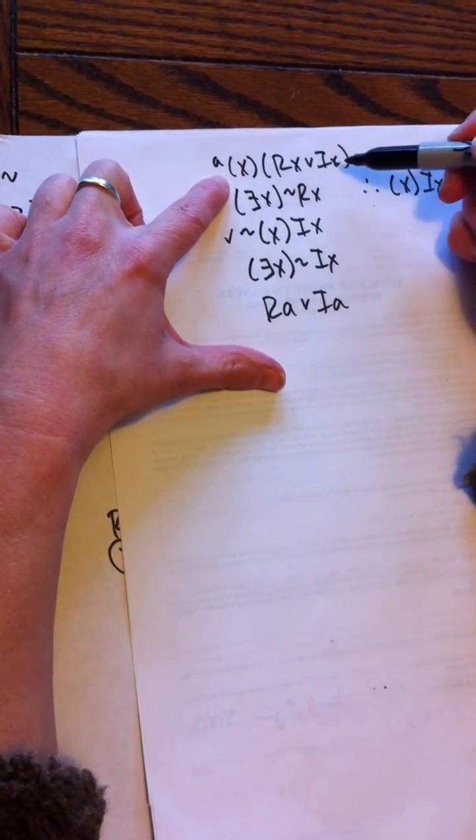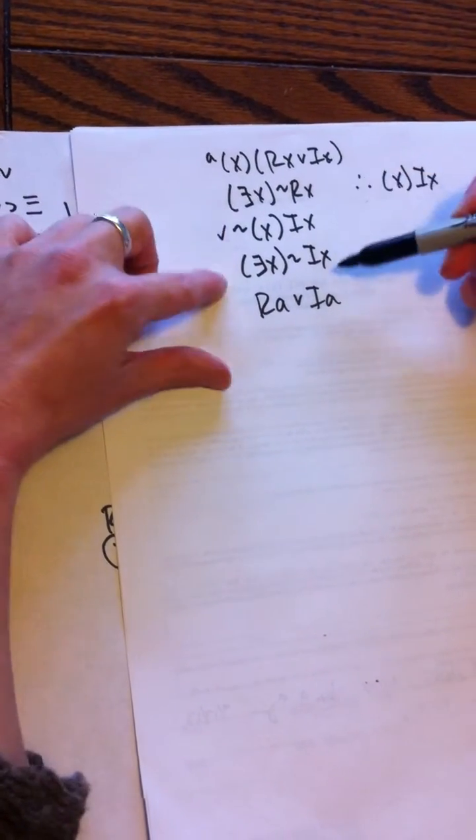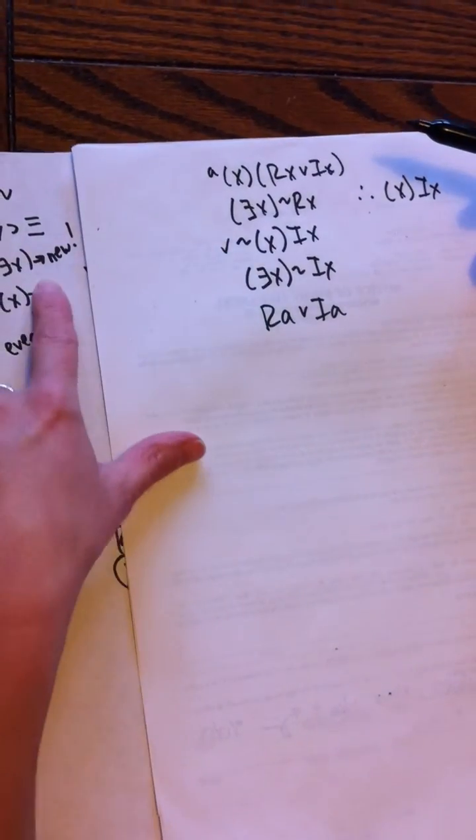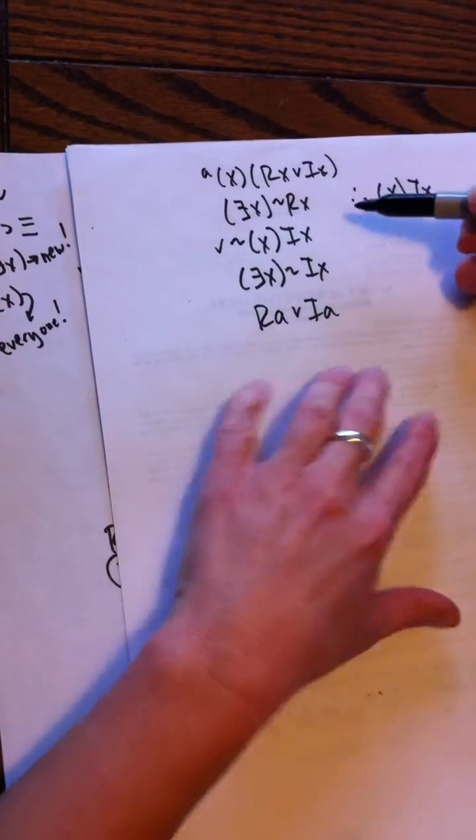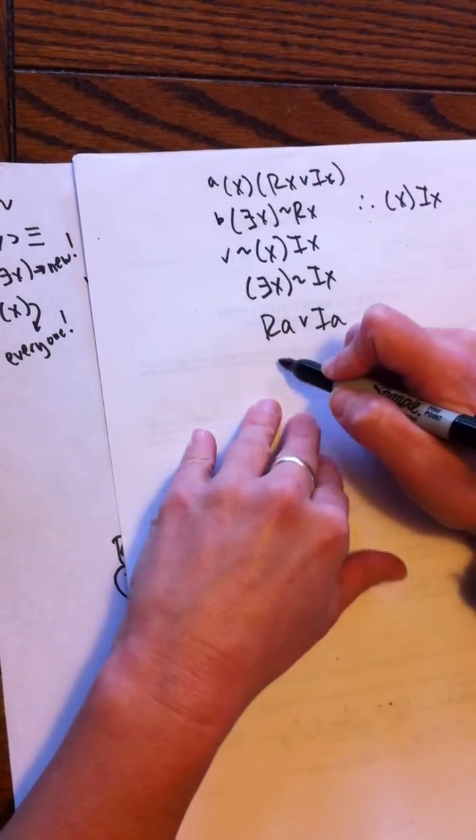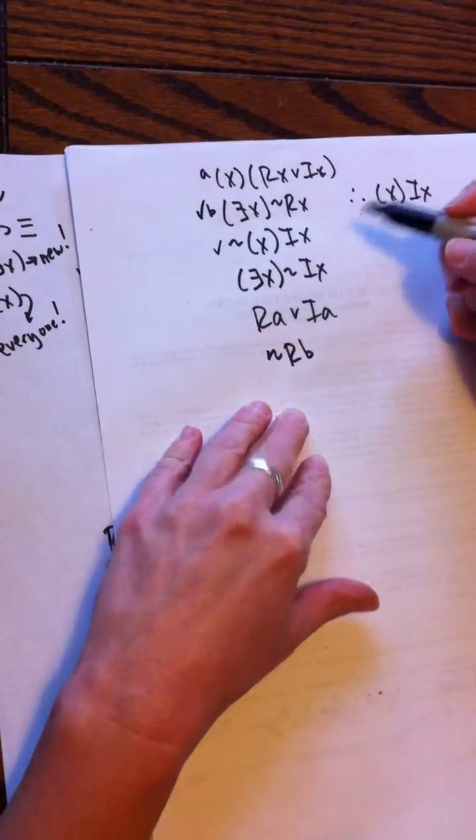Now I've got my existential to do. Existential, I have to choose a brand new constant, so I can't use a, so I'll use b: tilde Rb. Then I get to check the existential.